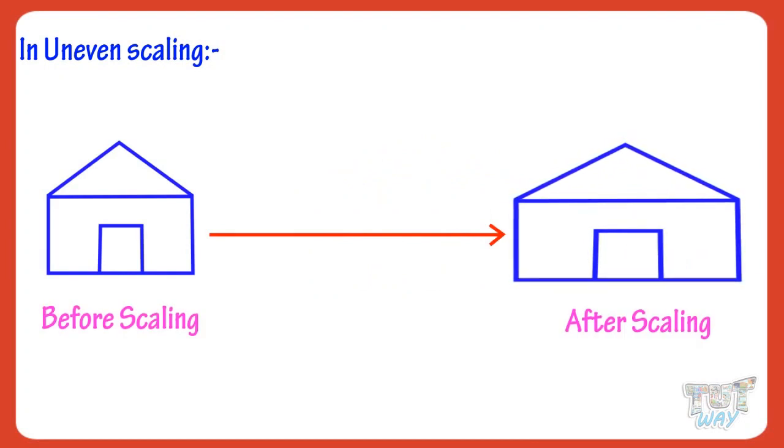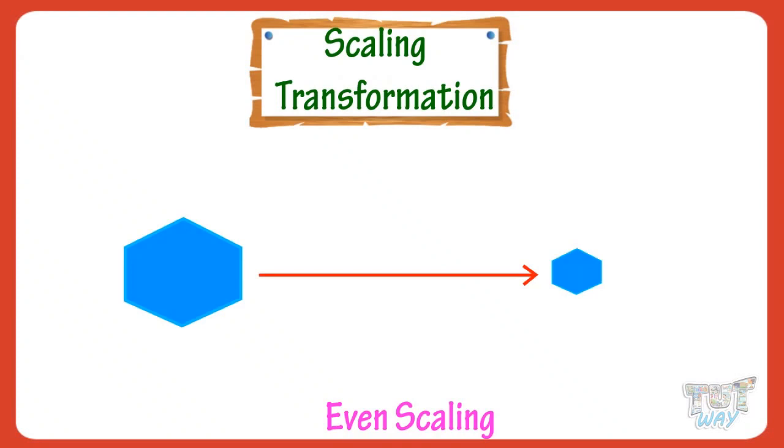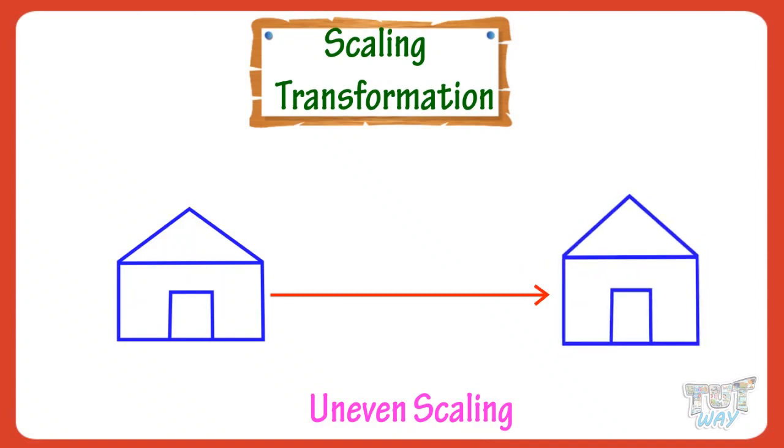So kids, today we learned two types of transformations on 2D figures. Translation, which is the same as sliding an object along a straight line, and scaling, where even scaling is the same as zooming in or zooming out, and uneven scaling, where along with the size, shape of object is also changed.